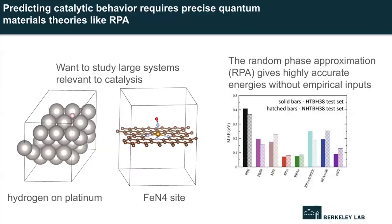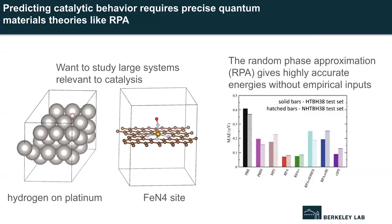Your first question should be: what is a many-body quantum materials calculation and what is it good for? Broadly, I'm interested in using the principles of quantum mechanics to study the chemical properties of systems relevant to catalysis — industrially relevant catalysis preferably. We might want to understand the binding energy of a hydrogen atom or molecule onto a platinum surface, or the transition state of oxygen reduction on an iron-nitrogen defect site in graphene, both of which are really interesting systems for electrochemical water splitting.